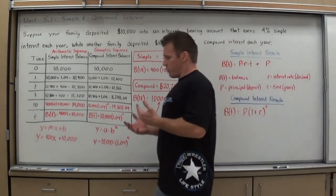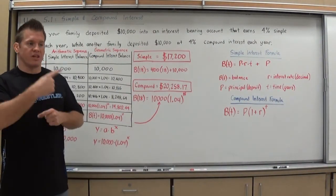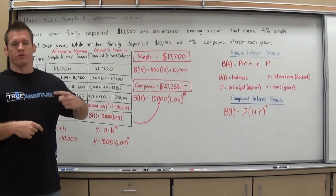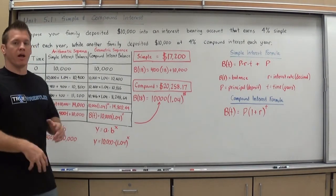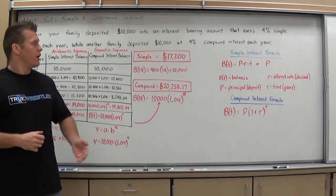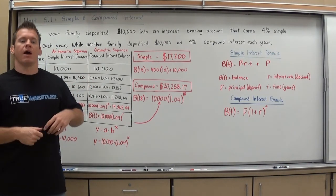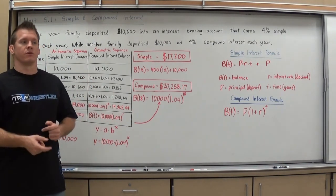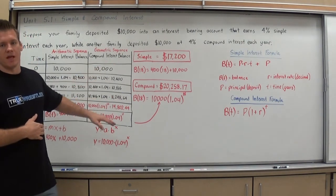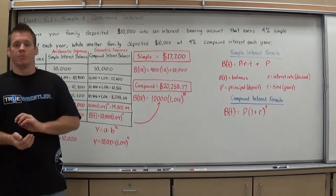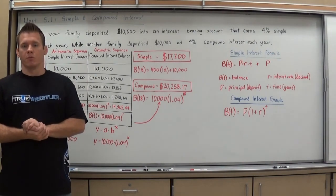So again, just to summarize what we have, we have simple interest, which is just adding one year's interest every single year. It never changes. It makes it arithmetic and a linear function when you write it. And we have compound interest, which takes the interest you've earned, adds it back into the account, and then recalculates the interest every single year. So it's timesing by the same number every time, making it geometric and an exponential function when we actually write it.